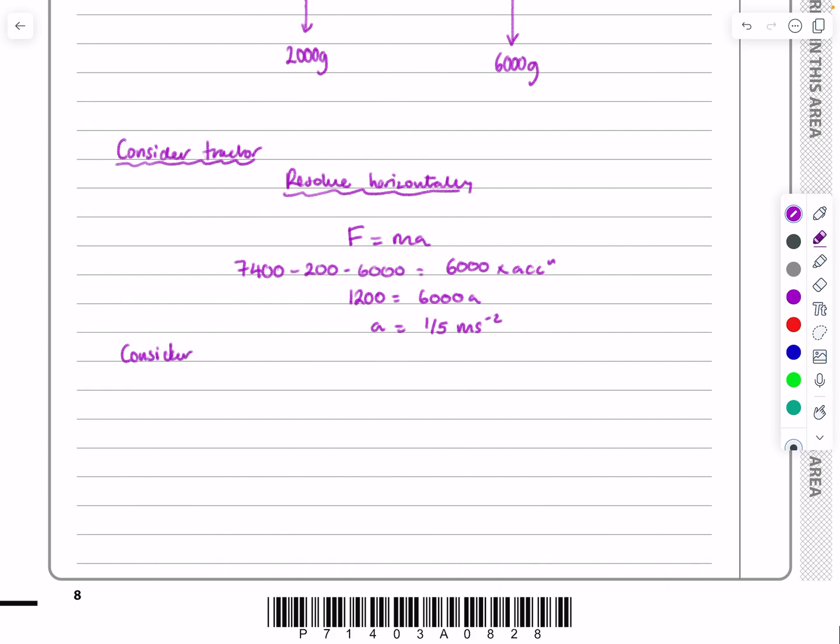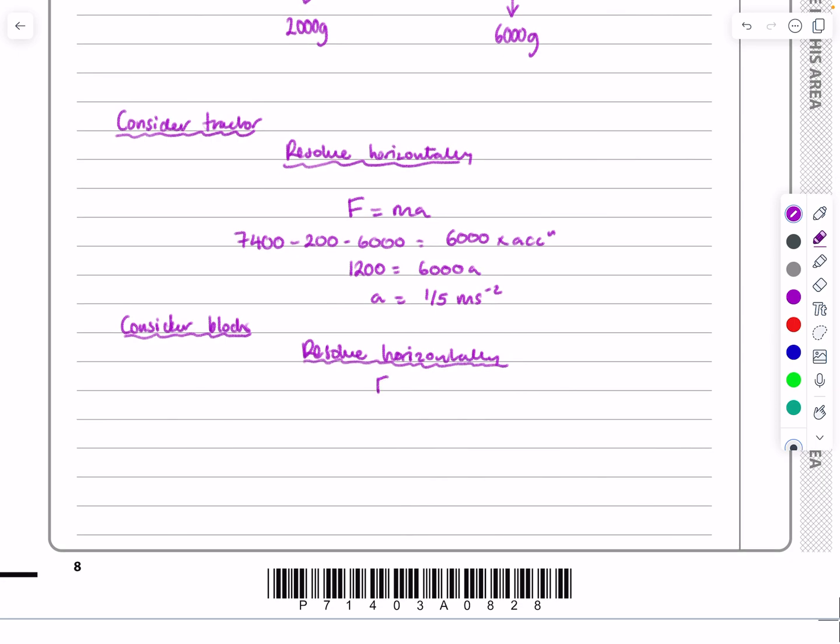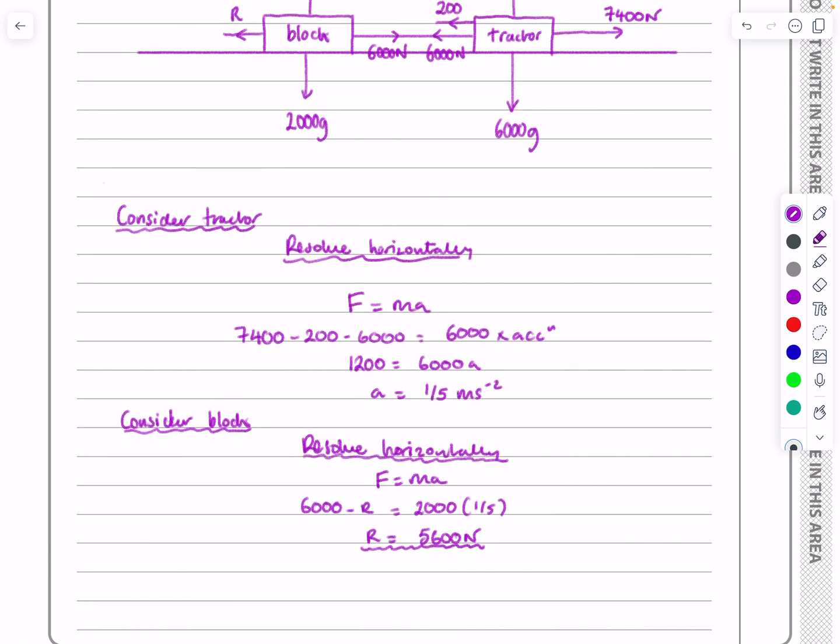So consider the block. Resolve horizontally. I always tell all my students, write all this information. It takes a couple of seconds to write it in, but it's just making it clear to the examiner what you're doing. And, you know, any of us can make mistakes. I want to be able to get some method marks. I know there's not many of them available. And also, I think I'm less likely to make a mistake if I go through and do everything in quite a logical way. So F, we've just said that, that's going to be this time 6,000 minus R is equal to mass times acceleration. And it's not 6,000 anymore, it's 2,000 now. So there's a perfect example of where, just by writing all this stuff out and taking a bit of time, we can just rearrange this and R works out to be equal to 5,600 newtons.